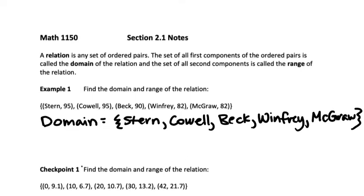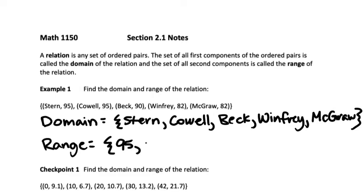I enclose that in the squiggly bracket. Now for the range, I'm going to list all of the second components. Some second components are repeated — 95 appears in two different points — but when I list it in the range, I only list that number once. So I don't write 95 twice. Then I have a 90, and then 82, which also appears in two points but I only list it once. So the range is 95, 90, 82.